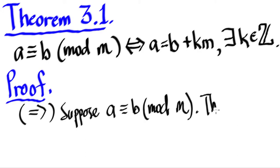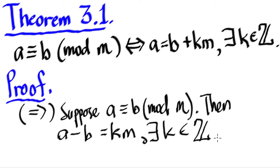By the definition of congruence, we say that A minus B is equal to KM for some K in the integers. You can revisit our videos if you're not familiar with this. So if this is true, we know this is true.